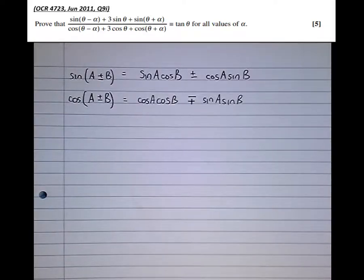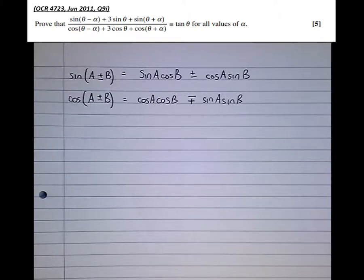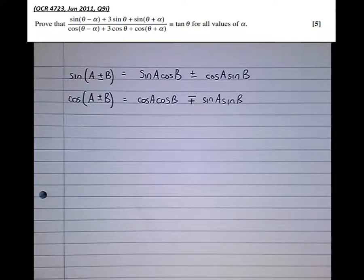So let's now have a look at the question. It says: prove that sine of theta minus alpha, plus 3 sine theta, plus sine of theta plus alpha, all over cos of theta minus alpha, plus 3 cos theta, plus cos of theta plus alpha, equals tan theta.